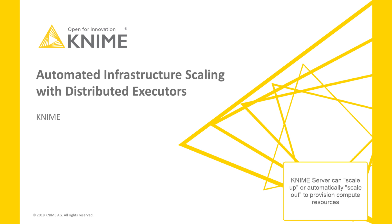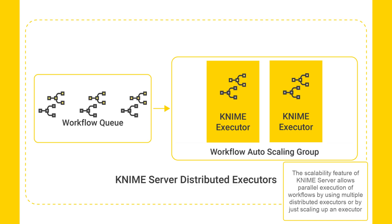KNIME Server can scale up or automatically scale out to provision compute resources. The scalability feature of KNIME Server allows parallel execution of workflows by using multiple distributed executors or by just scaling up an executor. For example, train hundreds of thousands of models at the same time through a large number of executors on one or more compute resources.